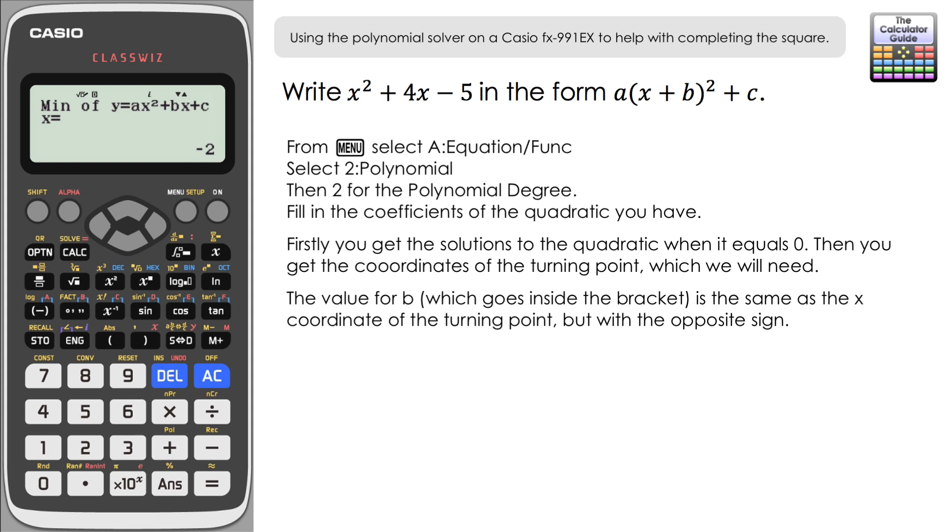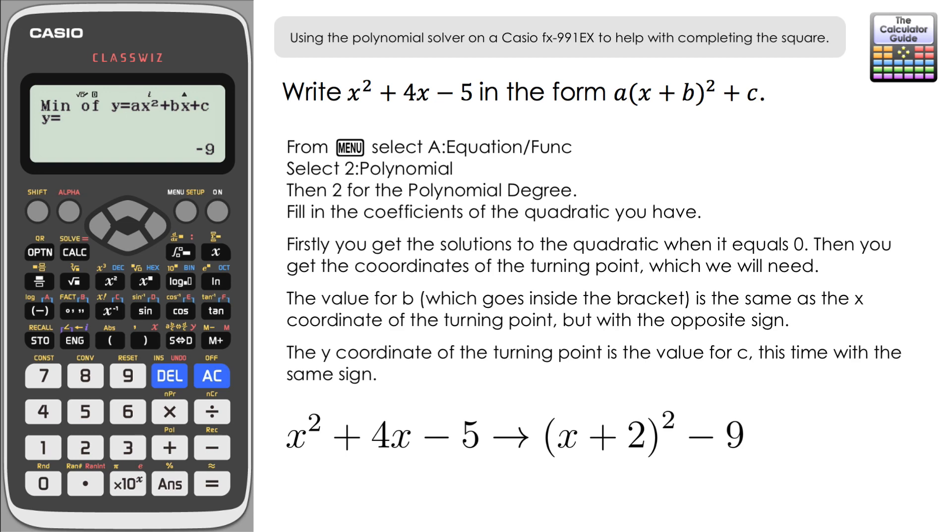So essentially it's whatever value we have for x here but the opposite sign. So we want to change that to +2, so our b is +2. So so far it's (x + 2)² and then if we press equals one more time we get the y coordinate of the minimum point, which is -9, and that is just what c is, so including the sign. So our c would be negative, in this case -9. So our completed square for this example would be (x + 2)² - 9.